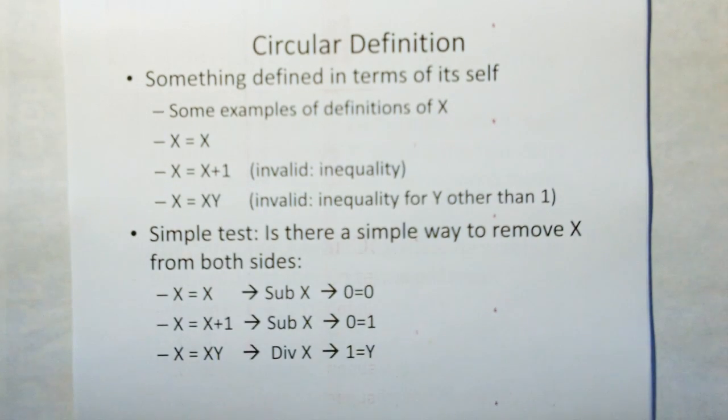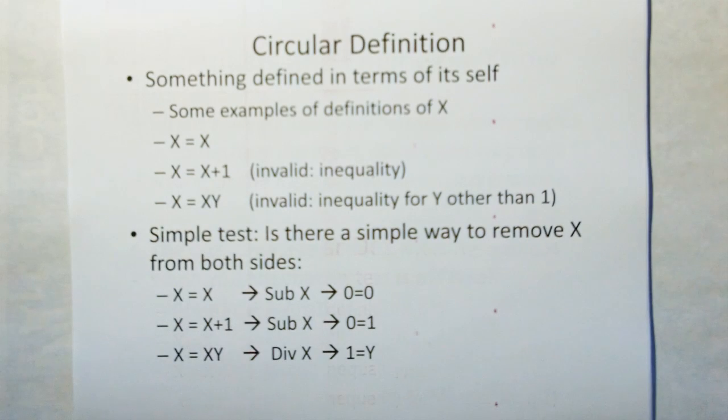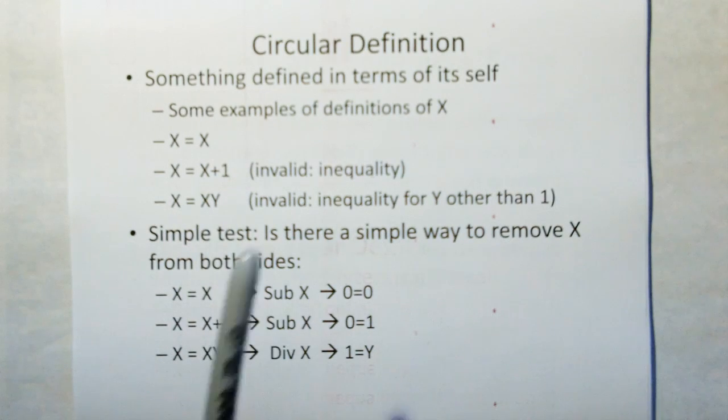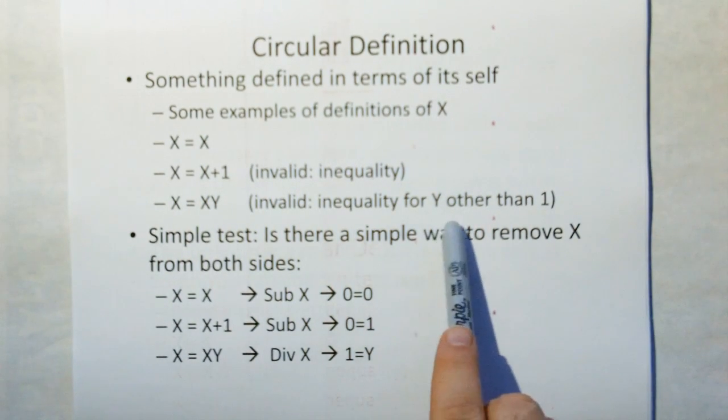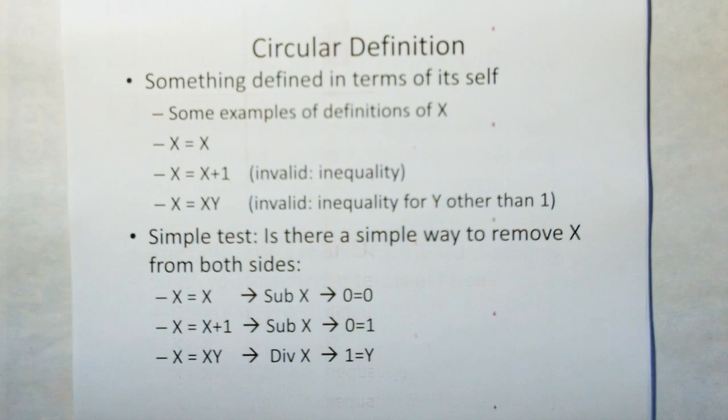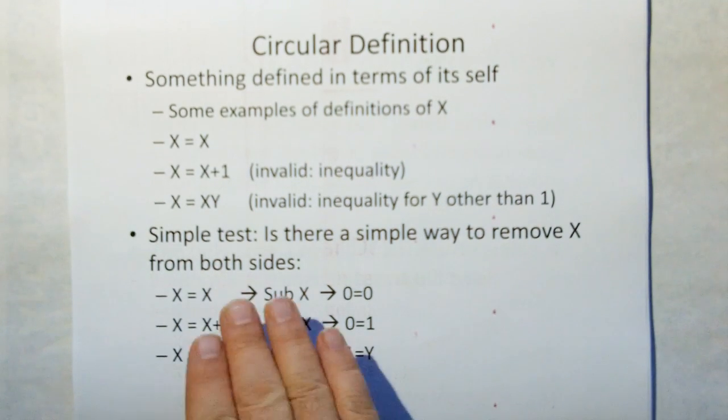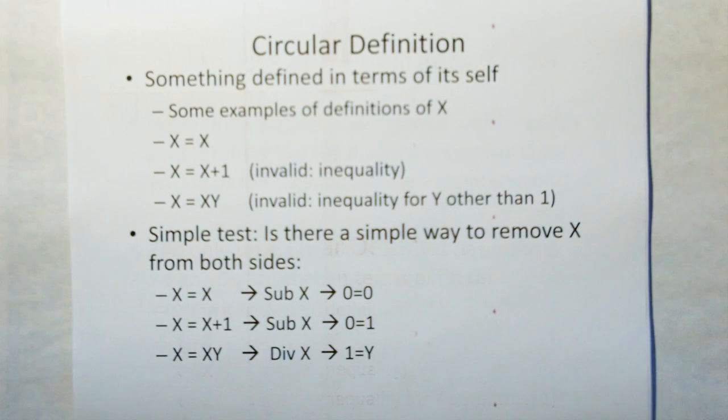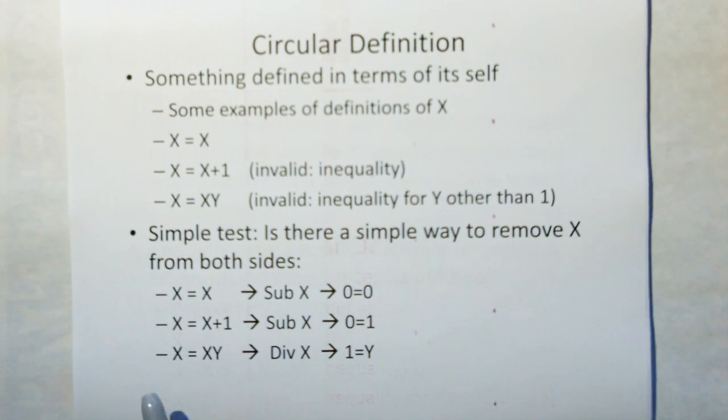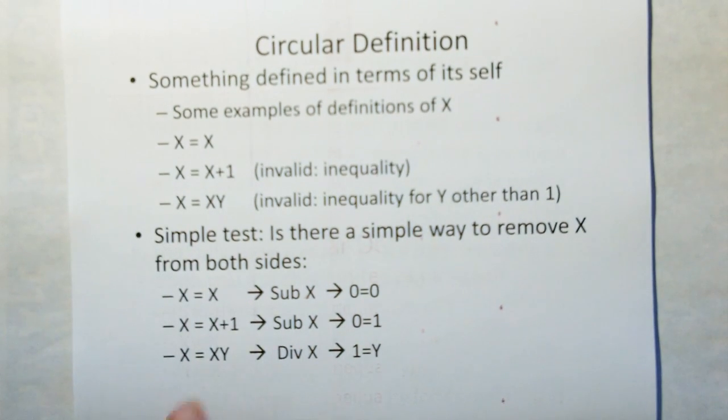That's the same thing as defining x as x equal to x. Even x equals x plus 1 can't happen because that would be an inequality, or x equals x times y, also an inequality for any value of y other than 1. The simple test to see if something is a circular definition is to do a mathematical operation to remove x from both sides. You subtract x from both sides and get 0 equals 0, or 0 equals 1 which is an inequality, or divide both sides by x and the definition falls out.